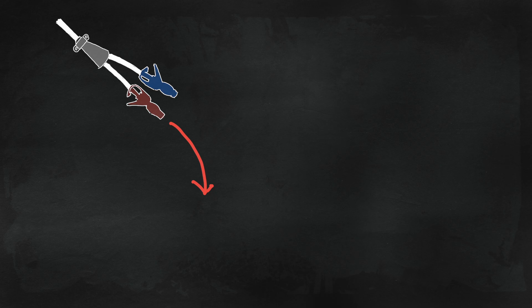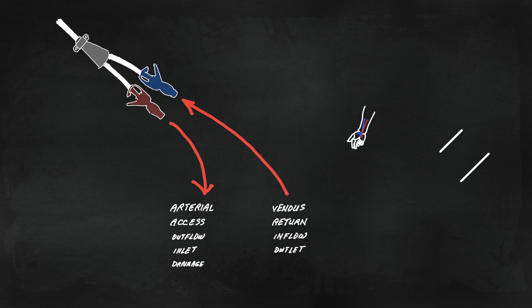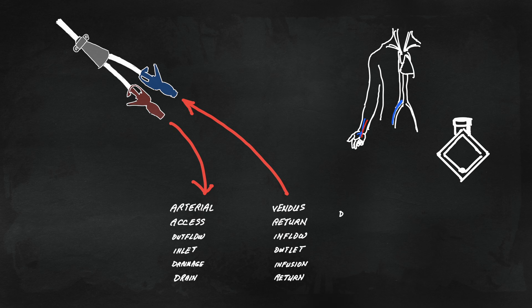A typical naming scheme in dialysis is arterial and venous ports, which makes sense with arteriovenous fistula or graft access, but not so much with catheter access where both drainage and transfusions are from a vein.